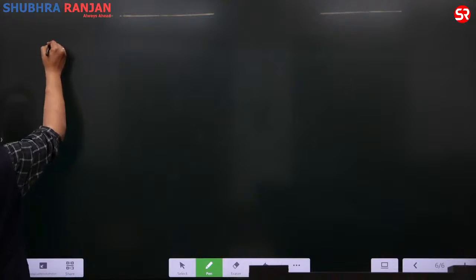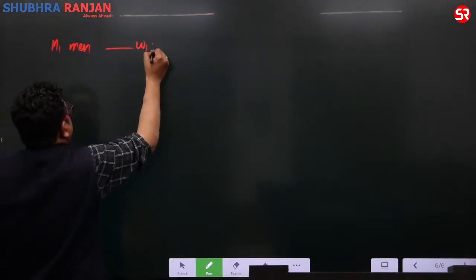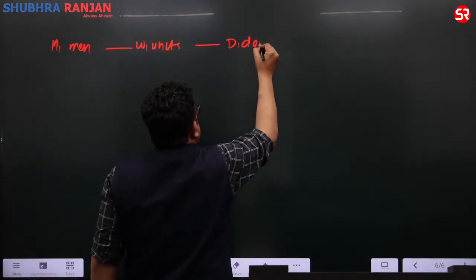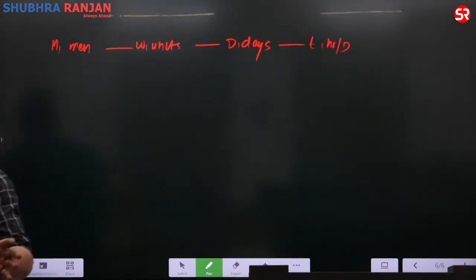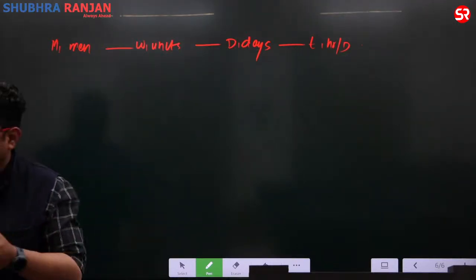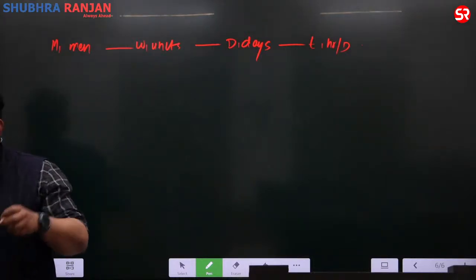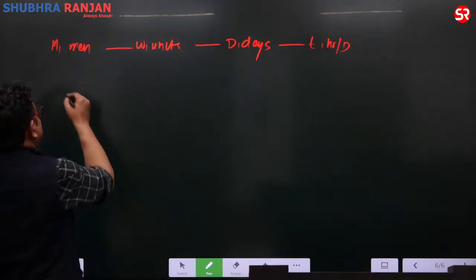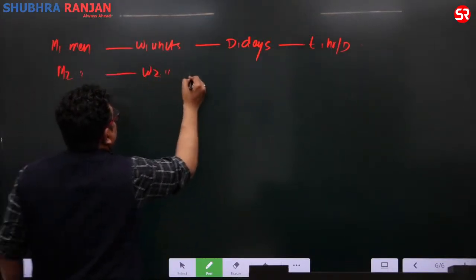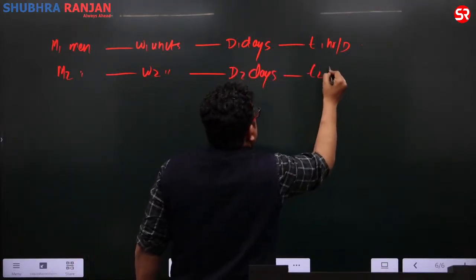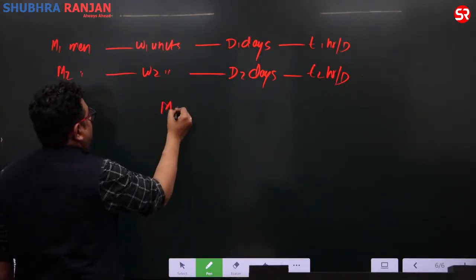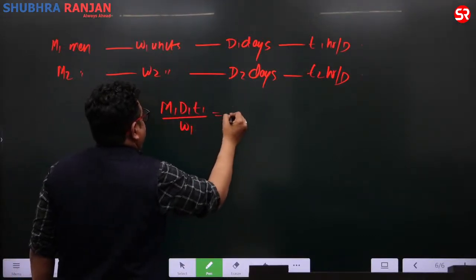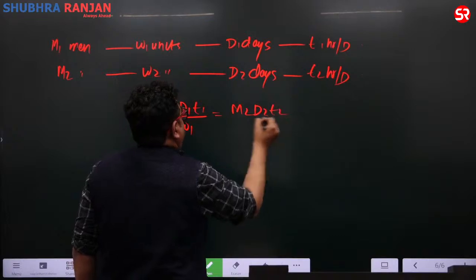The fourth component: M1 men producing W1 units in D1 days working T1 hours per day. Similarly M2 men, W2 units, D2 days, working T2 hours per day. In this case, the formula is M1 × D1 × T1 / W1 equals M2 × D2 × T2 / W2. This appears in state exams like UPPCS.